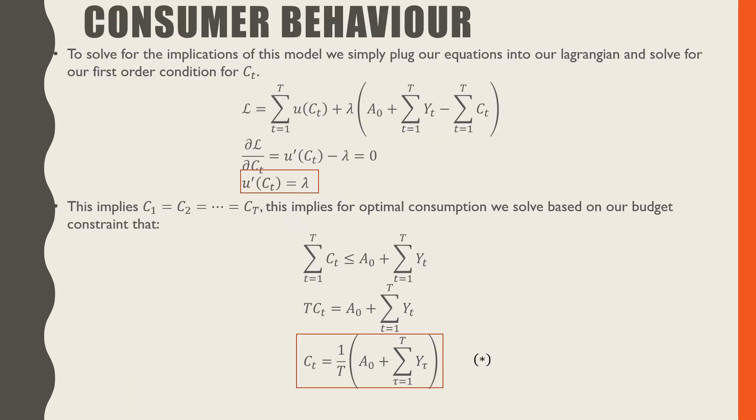To solve for the implications of this model, we simply plug our equations into our Lagrangian and solve for our first-order condition for C_t. This is just a standard utility maximization problem subject to constraint, and we find that from our first-order condition that our marginal utility from consumption u'(C_t) must equal lambda for maximization of our utility function. This implies that our consumption across all periods must be the same for optimal consumption.